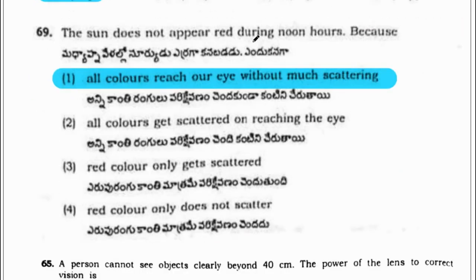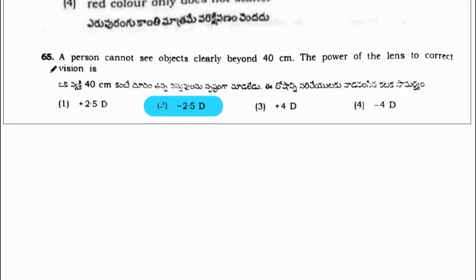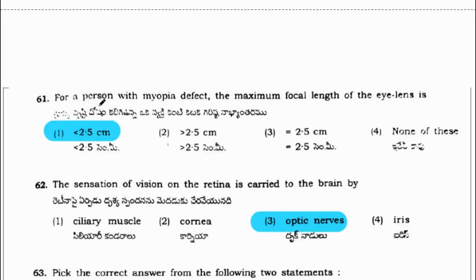The sun does not appear red during noon hours because all colours reach our eye without much scattering. This is the reason why the sun does not appear red during afternoon time. A person cannot see objects clearly beyond 40 cm. The power of the lens to correct the vision is minus 2.5 D, calculated as minus 1 divided by 0.40, which equals minus 2.5.